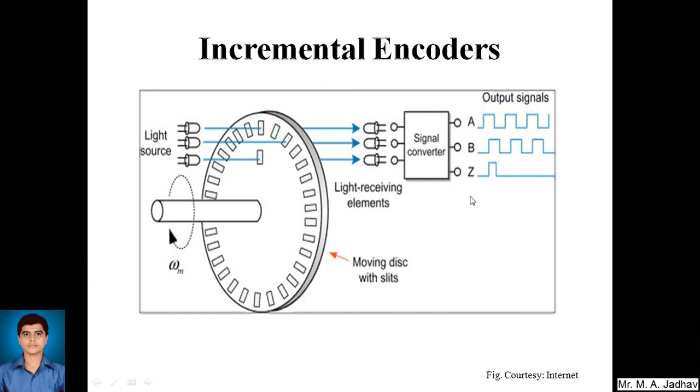Z will give us an idea regarding one complete revolution of the disk, that is the angular position of 360 degrees of rotation. A and B will give us the idea regarding the direction of the rotations. When we observe the pulse of A and pulse of B, we can get pulse at A earlier than the pulse at B.